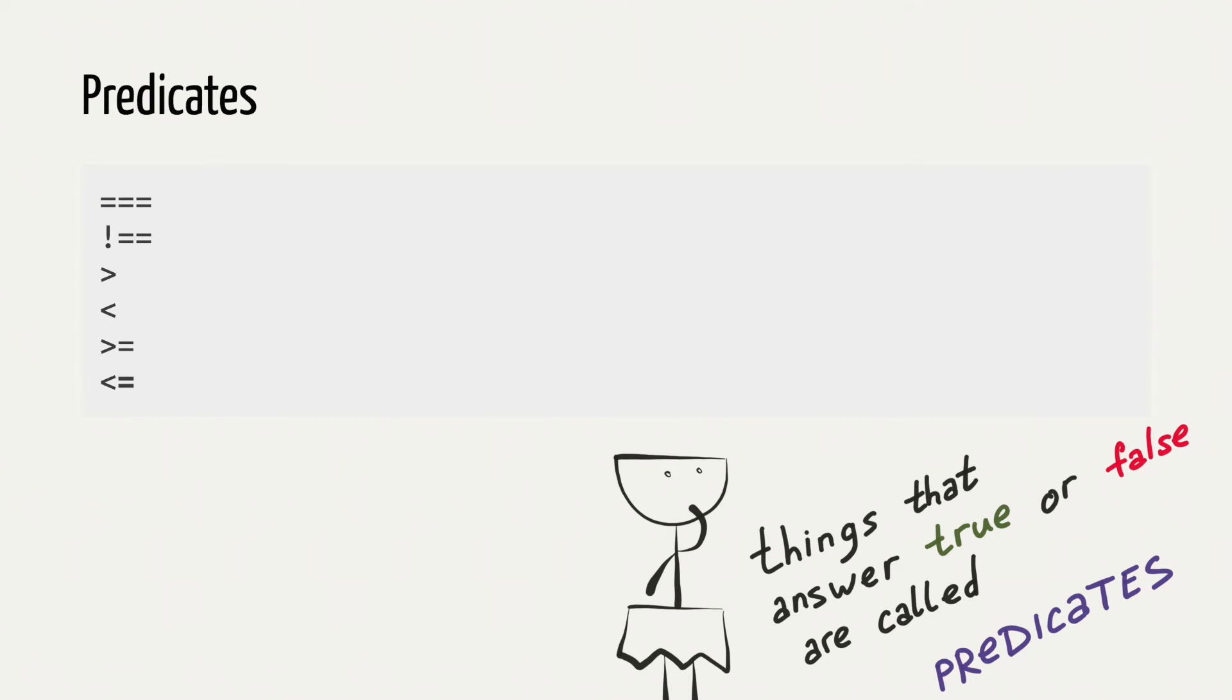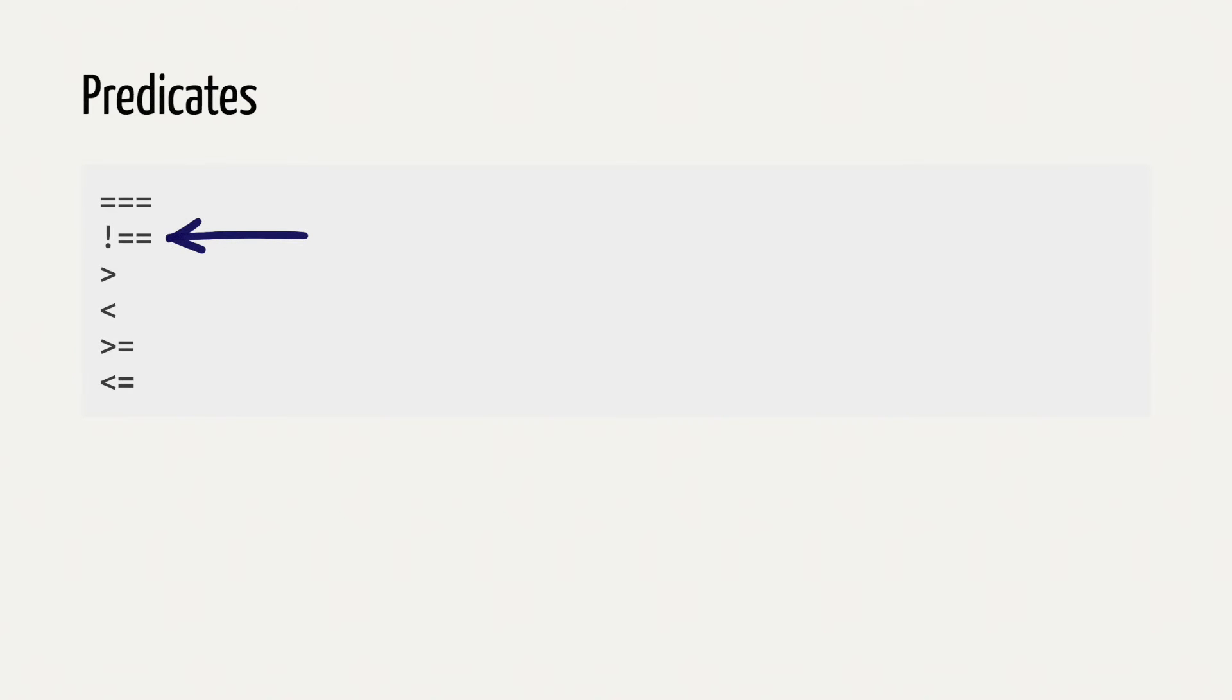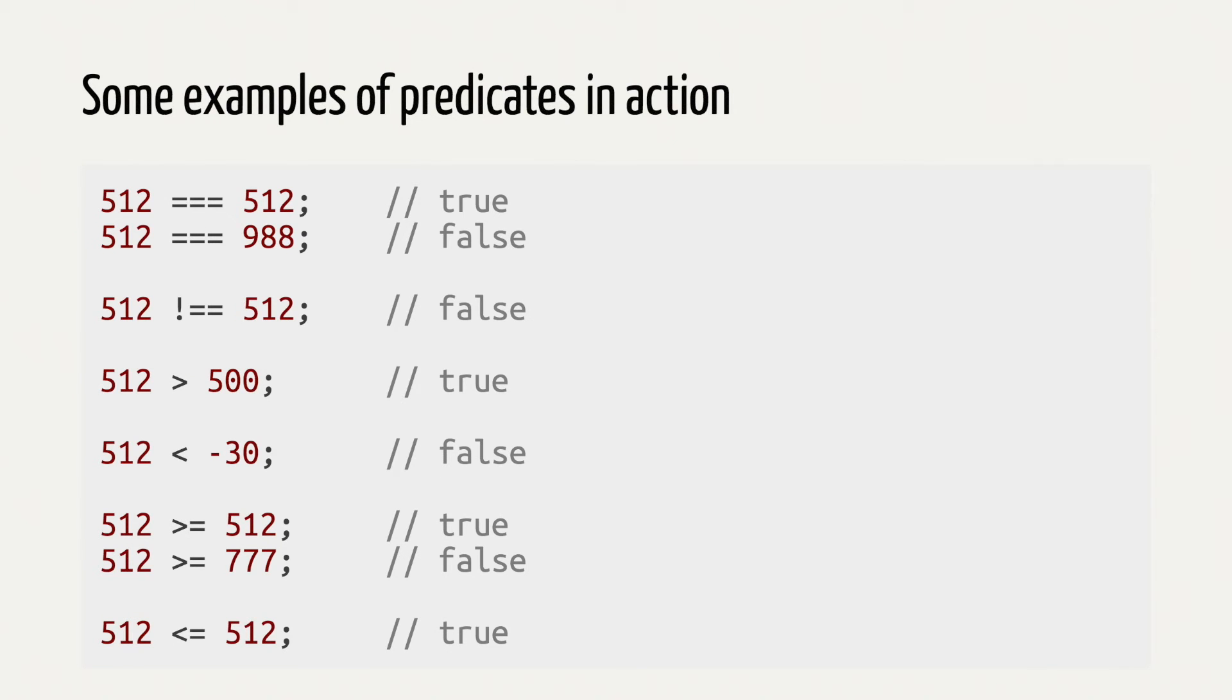There are other things that can give true or false answers. There's equal, not equal, greater than, less than, greater than or equal, and less than or equal. And here are a few more examples.